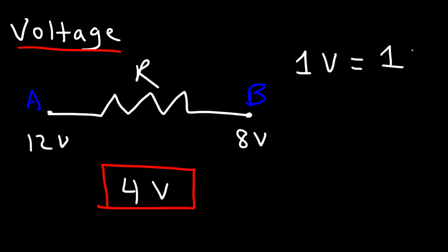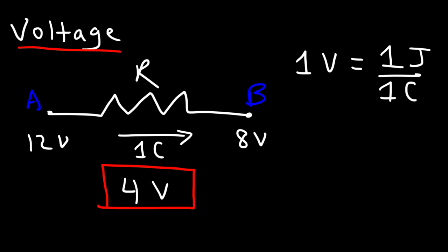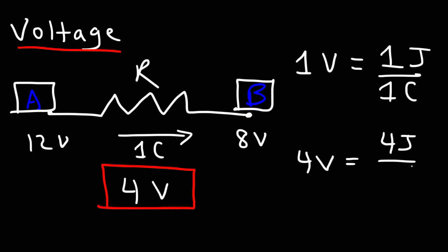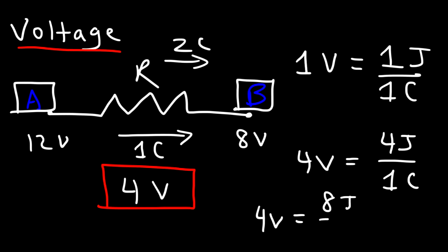One volt represents one joule of work that can be done when one coulomb of charge flows from point A to point B. So if we have one coulomb of charge flowing through this resistor, the voltage is 4 volts, meaning the potential drops by 4 volts going from A to B. When one coulomb passes through that resistor, four joules of work will be done on it. If we have two coulombs, it's eight joules of work done per two coulombs, because eight divided by two still gives us four.